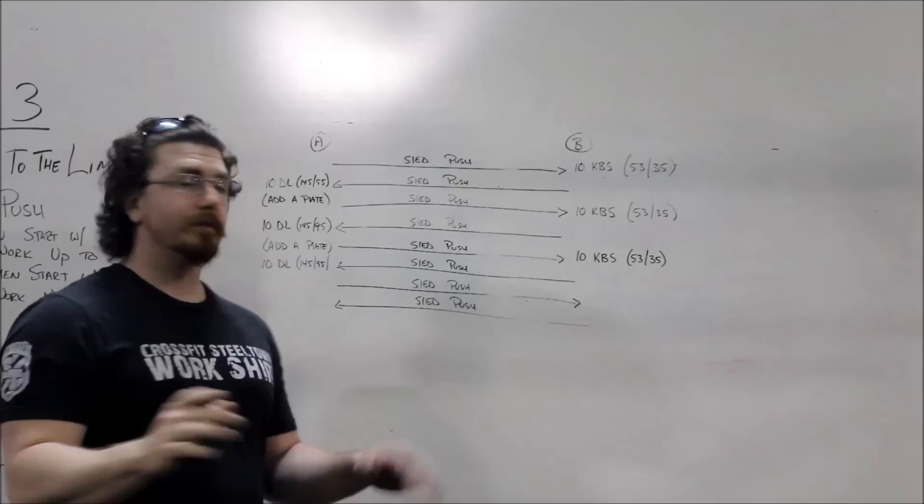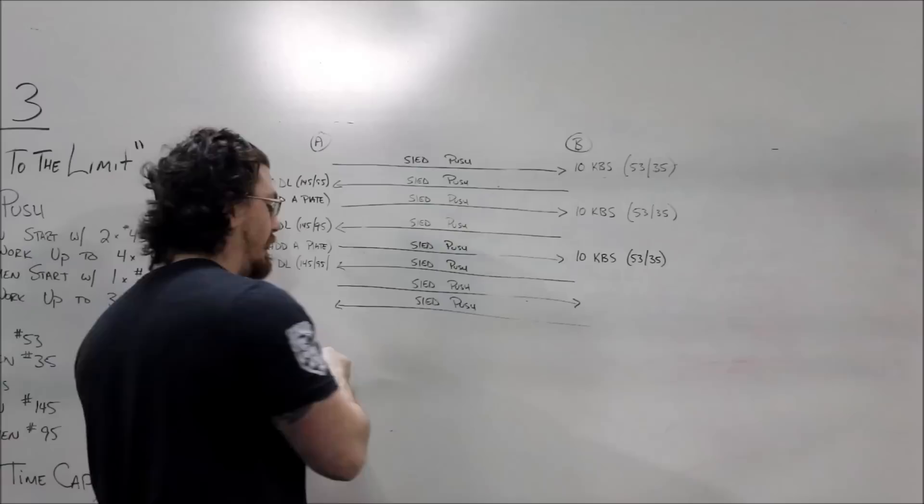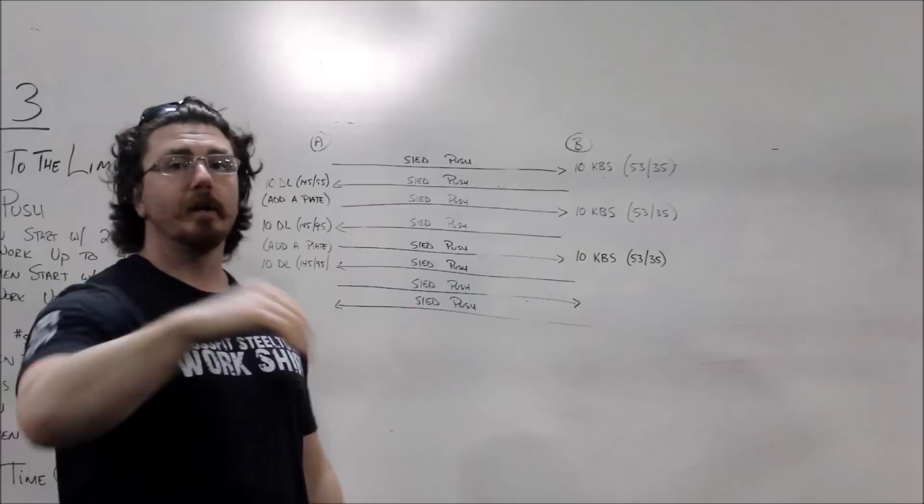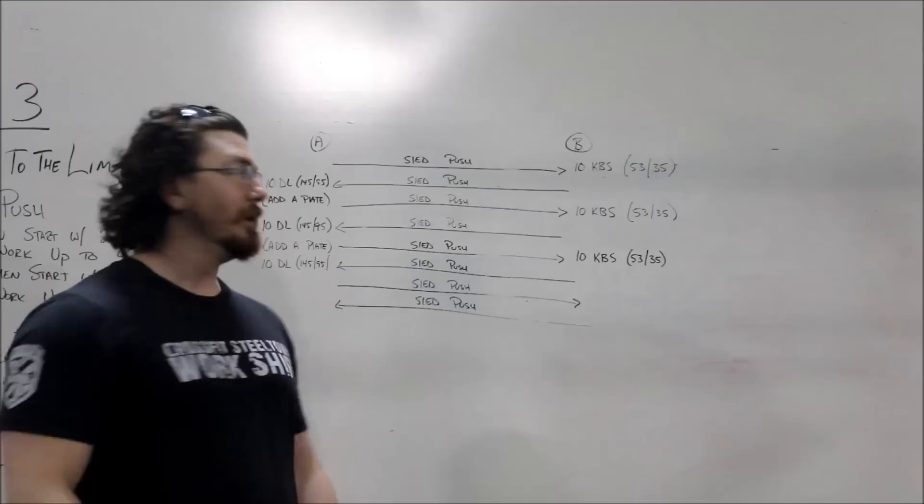You've got to push the sled down across the line, turn it around, bring it back. All the turning of the sleds is completely on the athlete. You can do it before, you can do it after the tasks are complete, completely up to you. This should answer most of the questions. If you have any other questions, go ahead and ask down below.